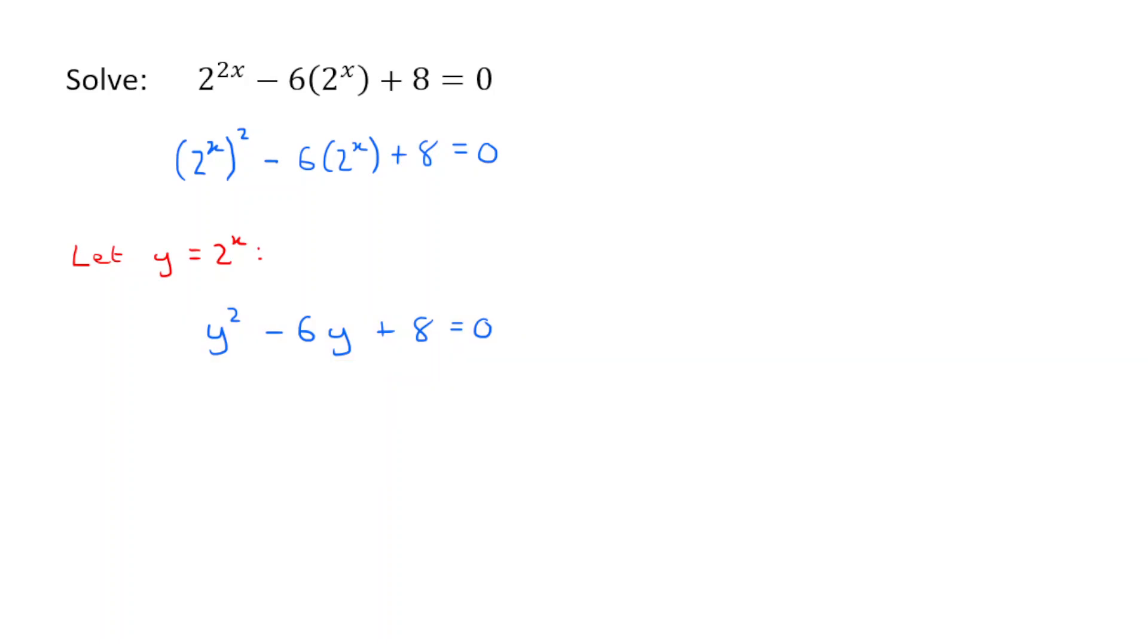And that quadratic can be factorized. We're looking for two numbers that add together to give negative 6 and multiply together to give 8. And so that's y minus 2 and y minus 4. That's how we solve that quadratic. And we factorize it. And so that's going to give us the solutions y is equal to 2 or y is equal to 4.